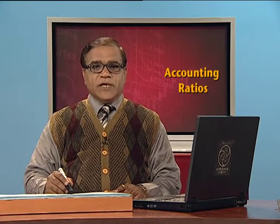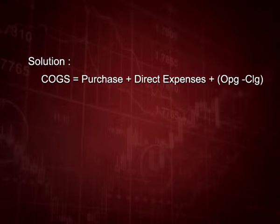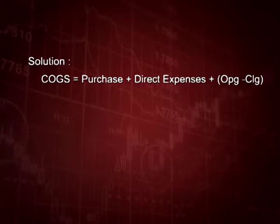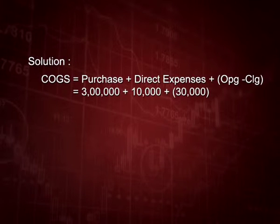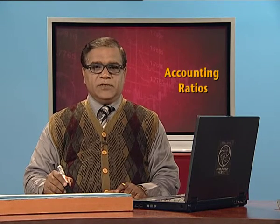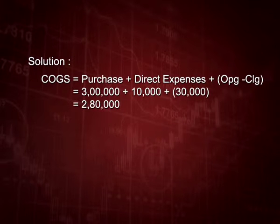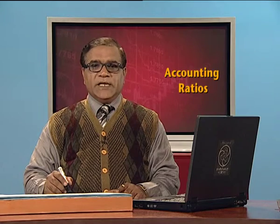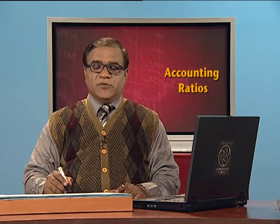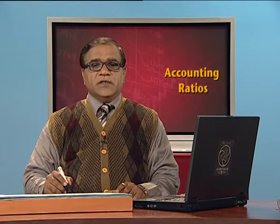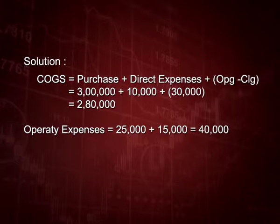To calculate cost of goods sold: purchases plus direct expenses plus the change in opening minus closing stock. Purchase is 3 lakh, plus employee benefit expenses of 10 thousand, minus the inventory change of 30 thousand, giving cost of goods sold of 2 lakh 80 thousand. Operating expenses are those related to business operations — selling and administrative expenses — but not loss on sale of investment, which is a non-operating expense. So operating expenses total 40 thousand (25 thousand plus 15 thousand).